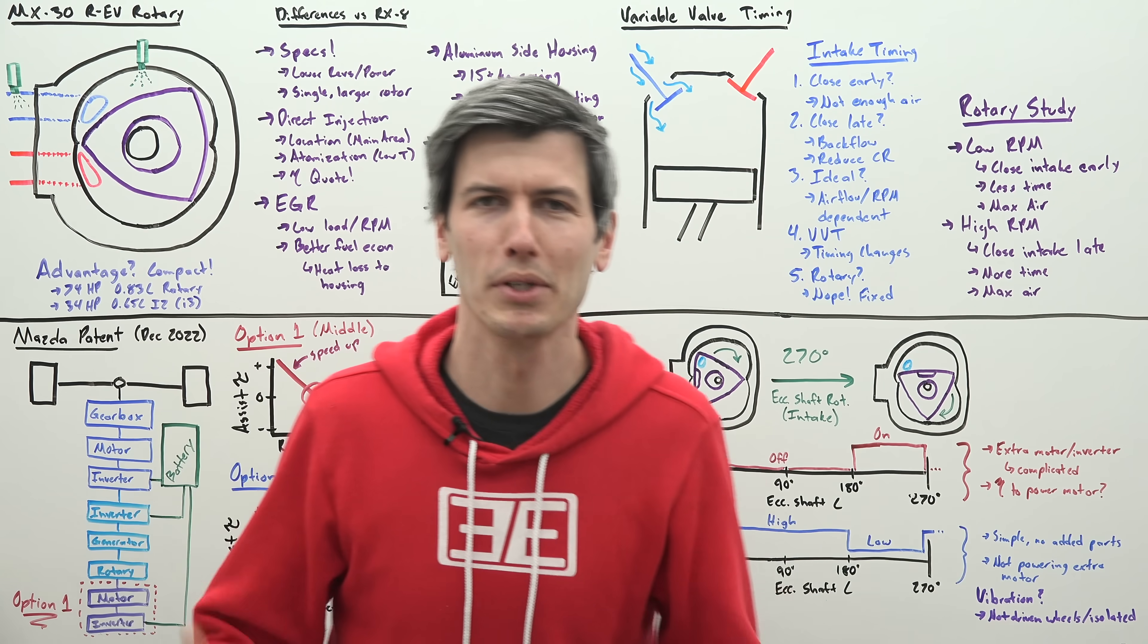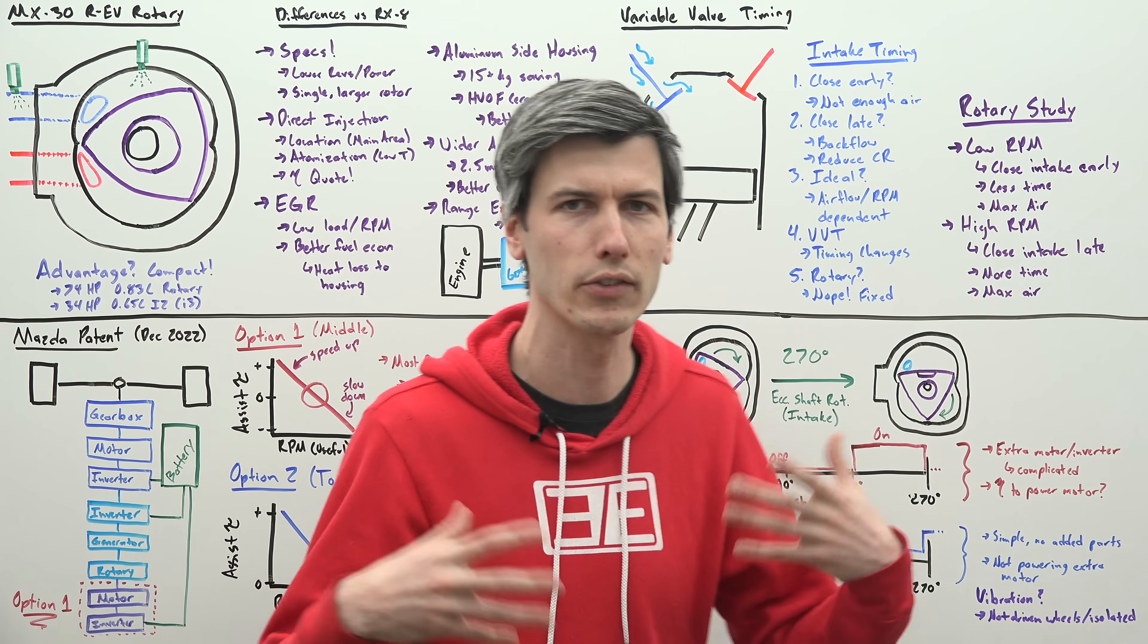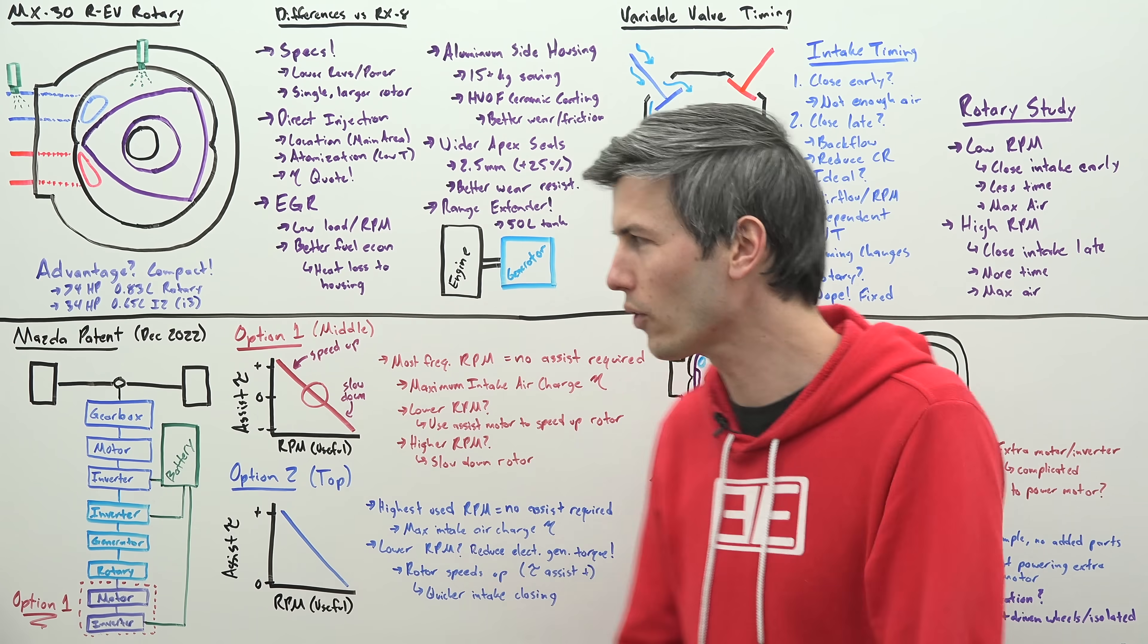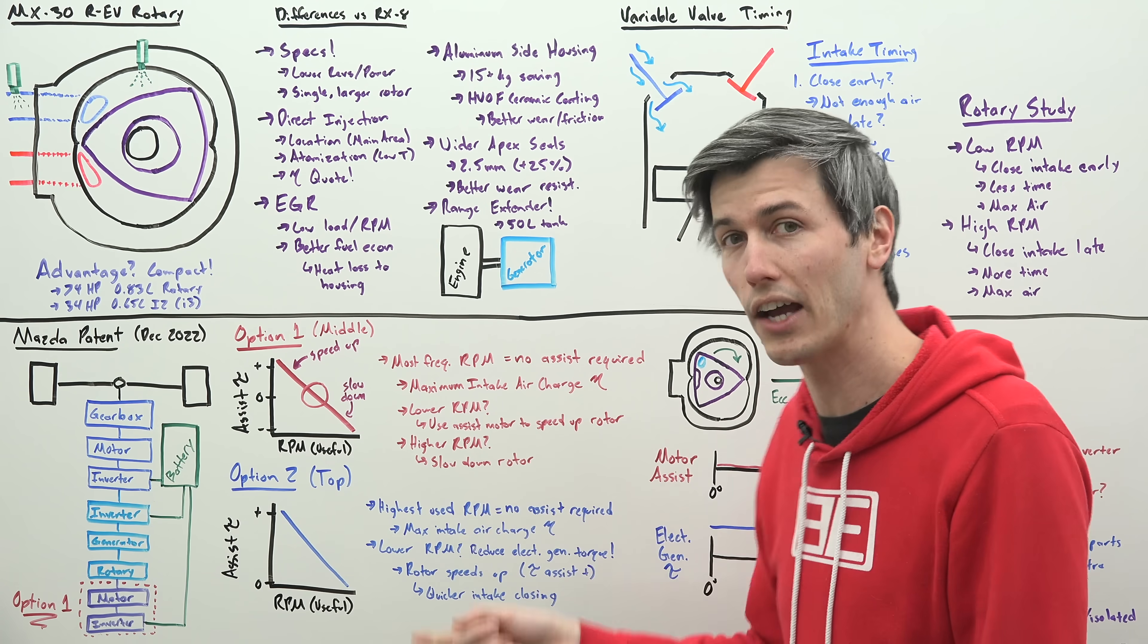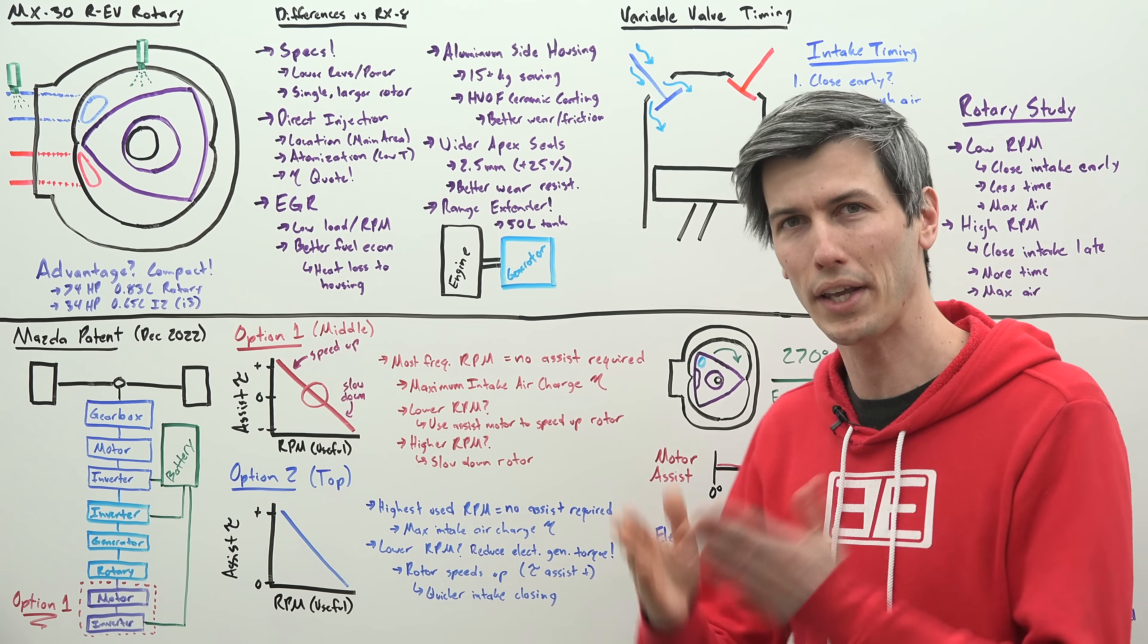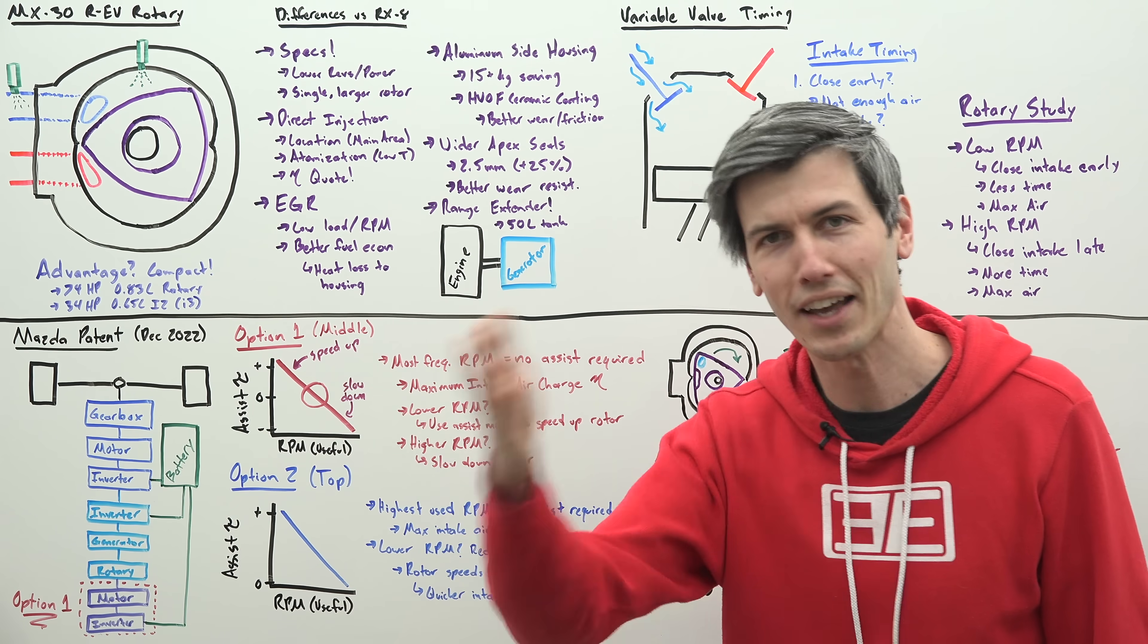Now you might reasonably say wow that's complicated we've got an extra motor and an extra inverter we're adding this complicated mess to this already complicated powertrain and also is the efficiency gain of rotating that rotor just a little bit faster for these different portions actually worth the added energy to power this motor and so is there a way that we can eliminate this motor and this inverter? Yes, yes you can.